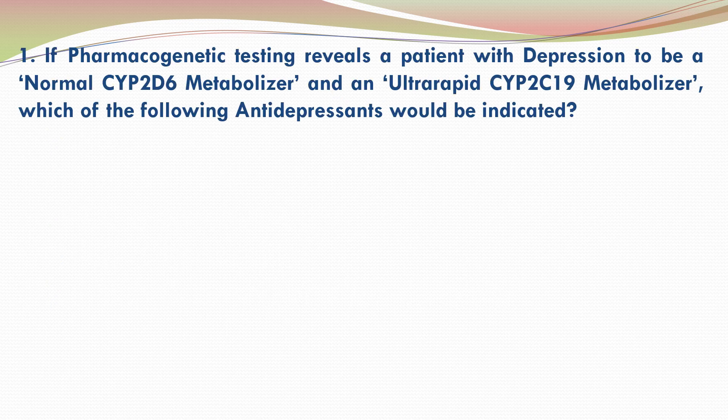Question 1. If pharmacogenetic testing reveals a patient with depression to be a normal CYP2D6 metabolizer and an ultra-rapid CYP2C19 metabolizer, which of the following antidepressants would be indicated?